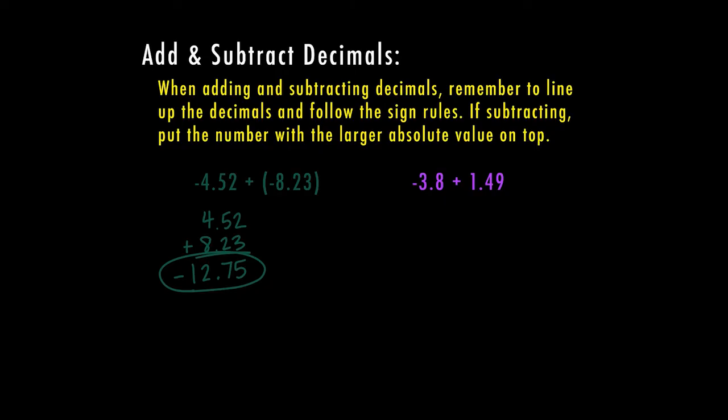Let's try another one. This problem is now a negative 3.8 and a positive 1.49. So now this one is going to follow the subtracting rule because one's positive and one's negative. I'm actually going to subtract the numbers. But just like when I'm subtracting whole values, I still have to subtract the larger number minus the smaller number. So in this case, 3.8 is actually a larger absolute value. So when I line up my decimals, 3.8 is going to go on top.